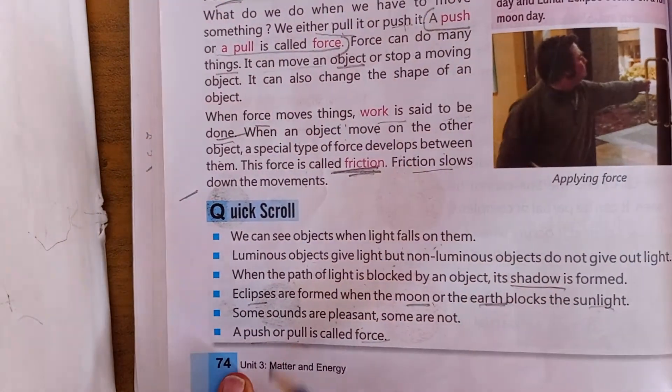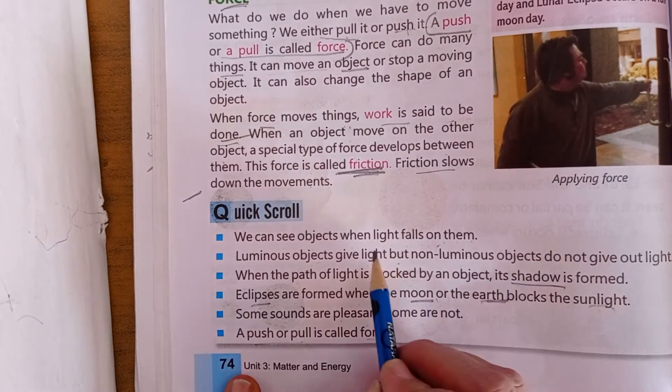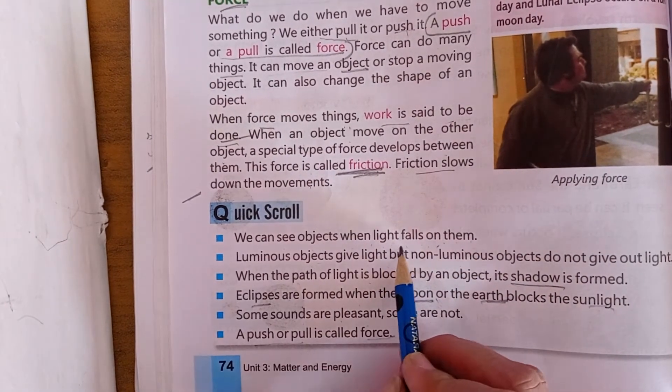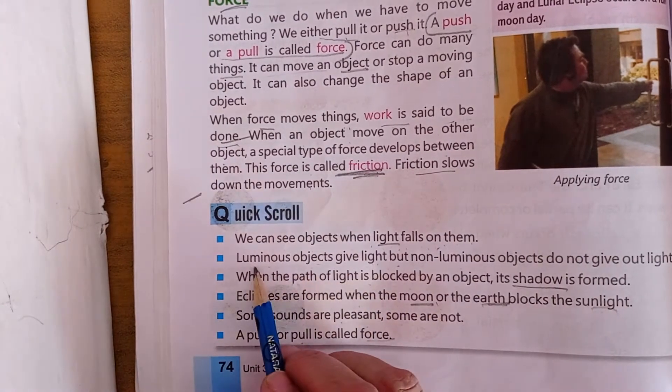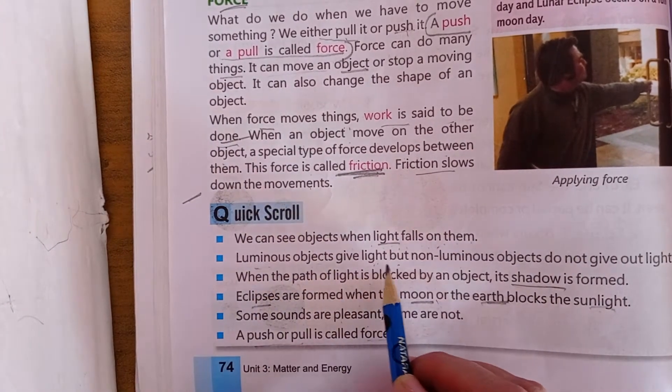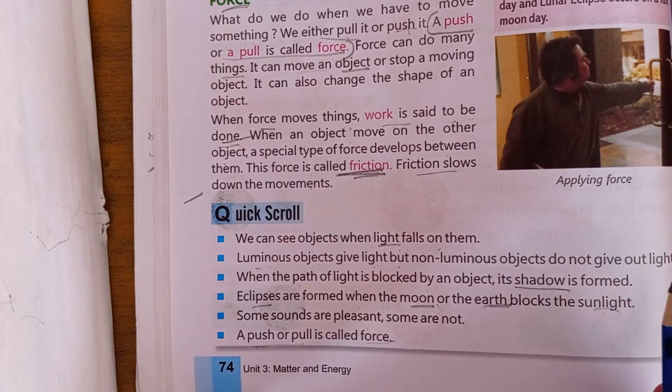So let's have a look at the quick scroll. We can see objects when light falls on them. When do we see something when it comes to light? Luminous objects give light, like torch, bulb.